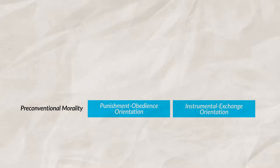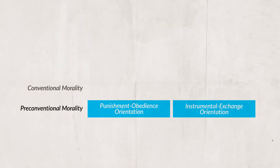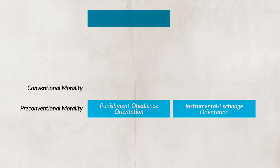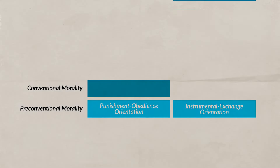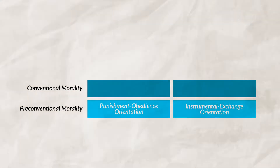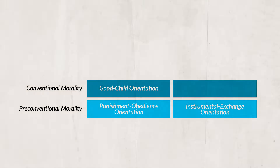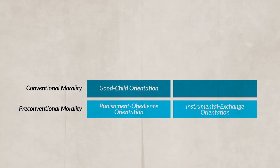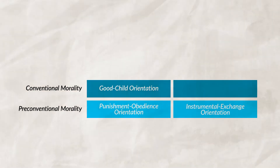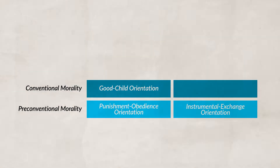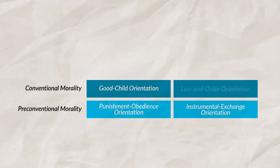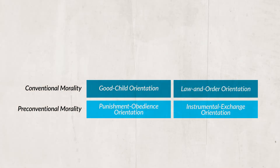From there, we move into the next level, which is conventional morality, which, just like the first level, consists of two stages. The first stage is good child orientation. Children follow rules to gain social approval from other individuals. What is good and bad is driven by social approval from others.